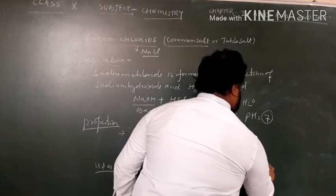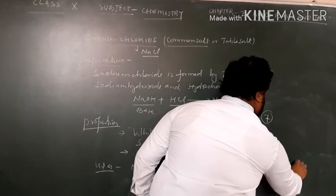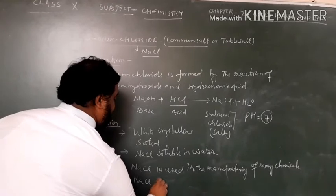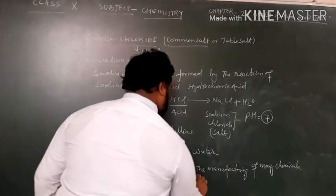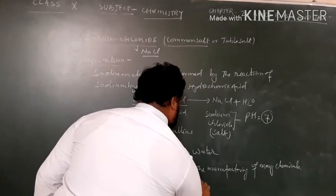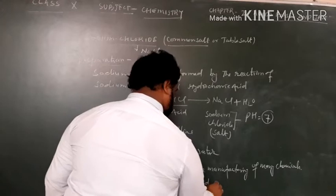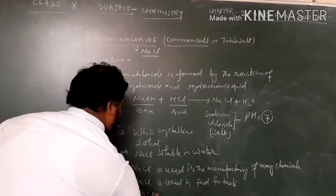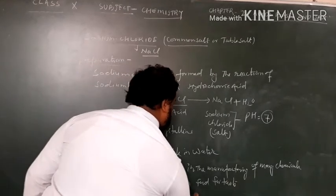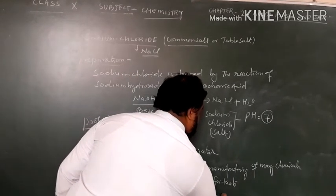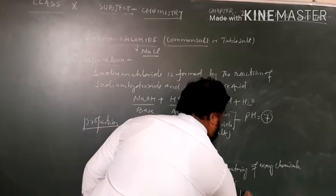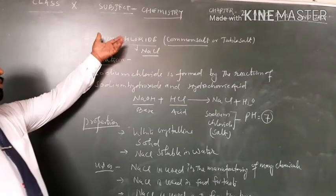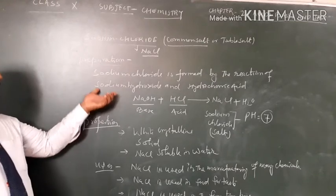This sodium chloride is used in the manufacture of many chemicals. NaCl is used in food for taste. Next, NaCl is used in the formation of brine. Many more uses of NaCl, about sodium chloride, their preparation, their properties, and their uses.